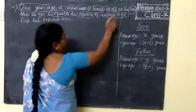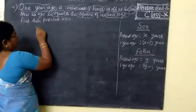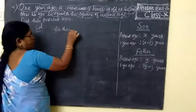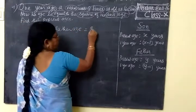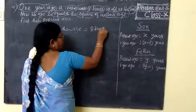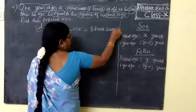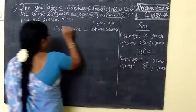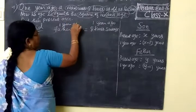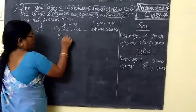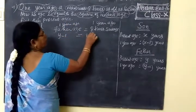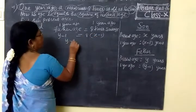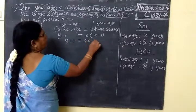This is 8 times as old as the son. So 1 year ago, father's age is equal to 8 times son's age. My statement on the age, it is easier. This is 1 year ago. Here also 1 year ago. So here you write: y minus 1 is equal to 8 times bracket x minus 1. So y minus 1 is equal to 8x minus 8.